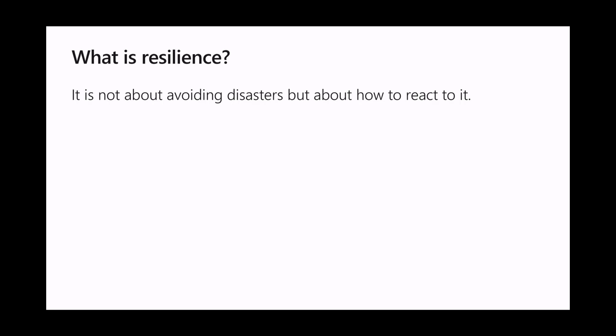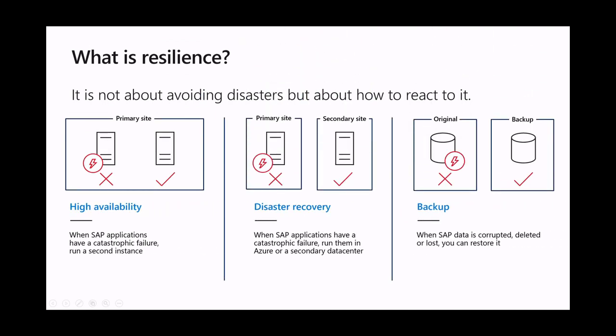Many organizations use SAP applications to run the most business-critical business processes. Hence, any planned or unplanned downtime comes at a high cost, which is why most organizations try to avoid any downtime or impact to business operations. When we look at resilience and try to define it, resilience is not about avoiding downtime altogether because that will not be possible — it is about how we react to it. Microsoft distinguishes clearly between high availability, disaster recovery, and backup.